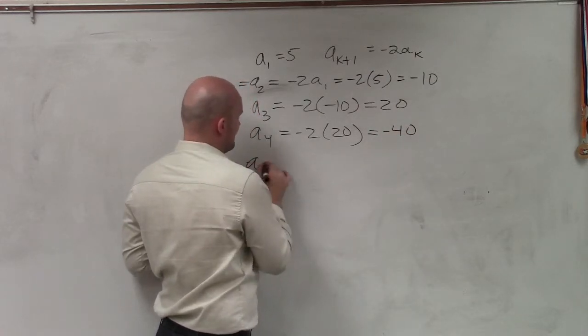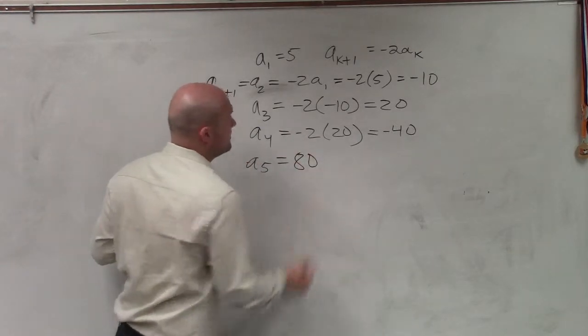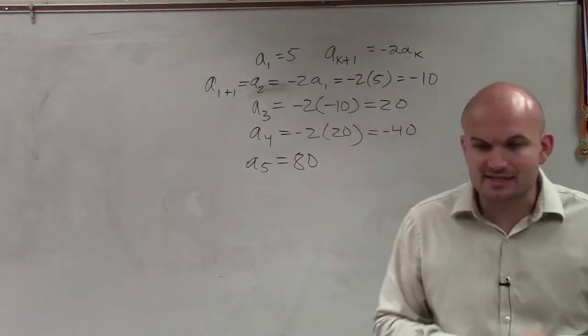A sub 4 is going to be negative 2 times 20, which equals negative 40. And then a sub 5, I will just do in my head, which will be negative 2 times negative 40, which equals positive 80. So that's the first step, alright?